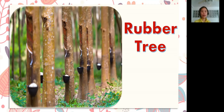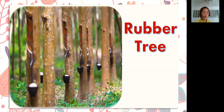The next example is rubber tree. The next example of dicotyledon is rubber tree. Let's spell the word. Ready? R-U-B-B-E-R-T-R-E-E. Rubber tree! Alright!